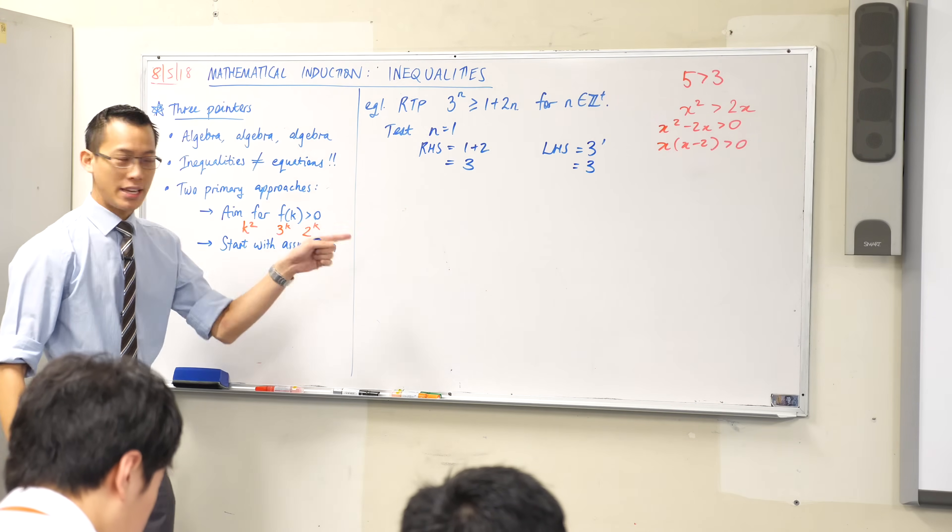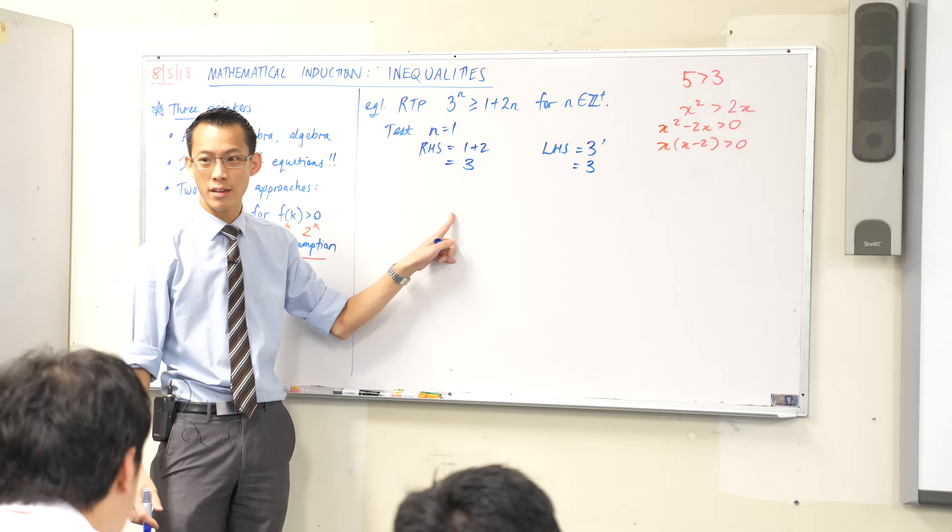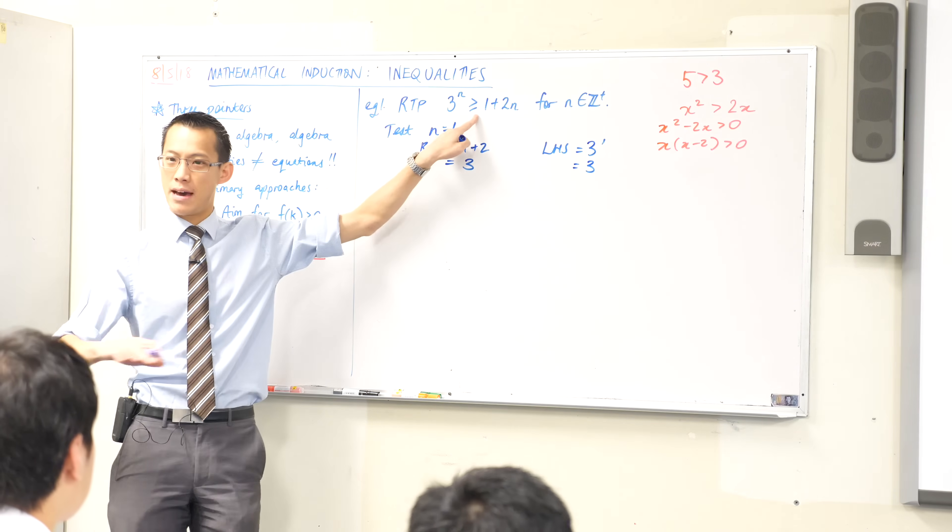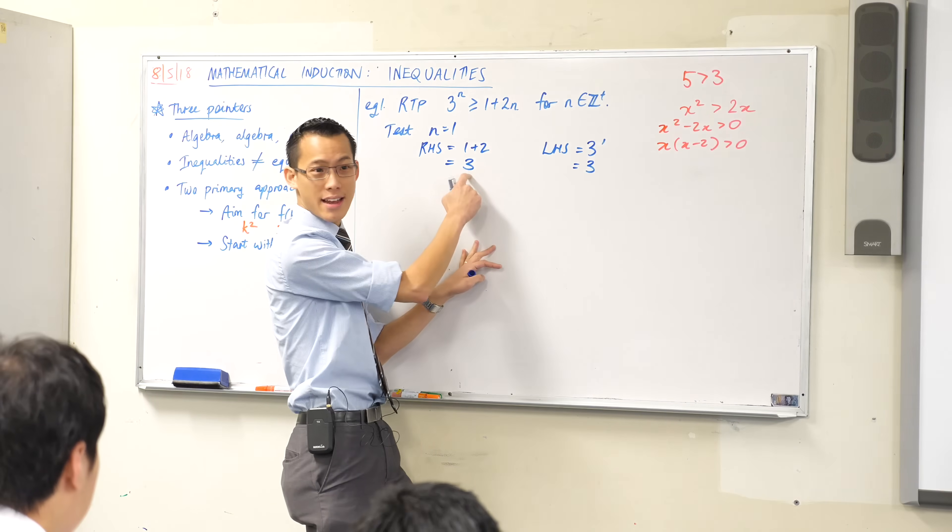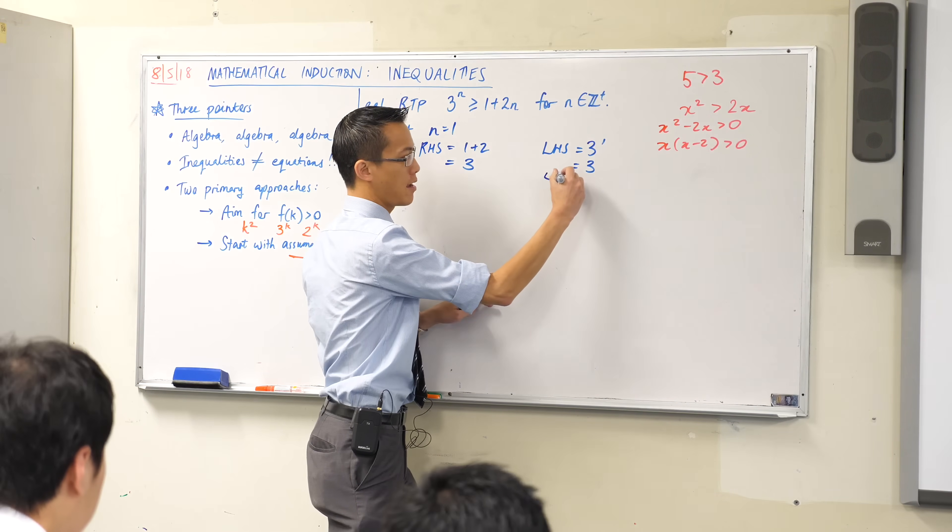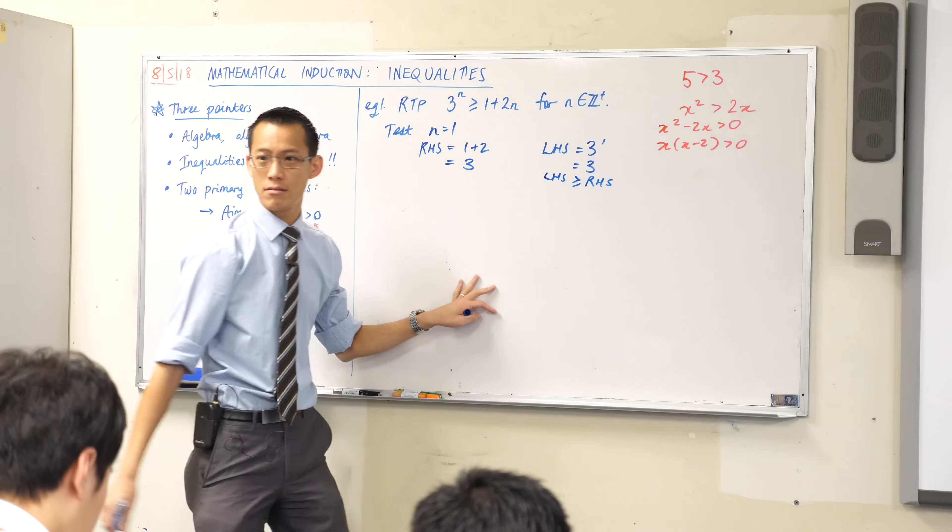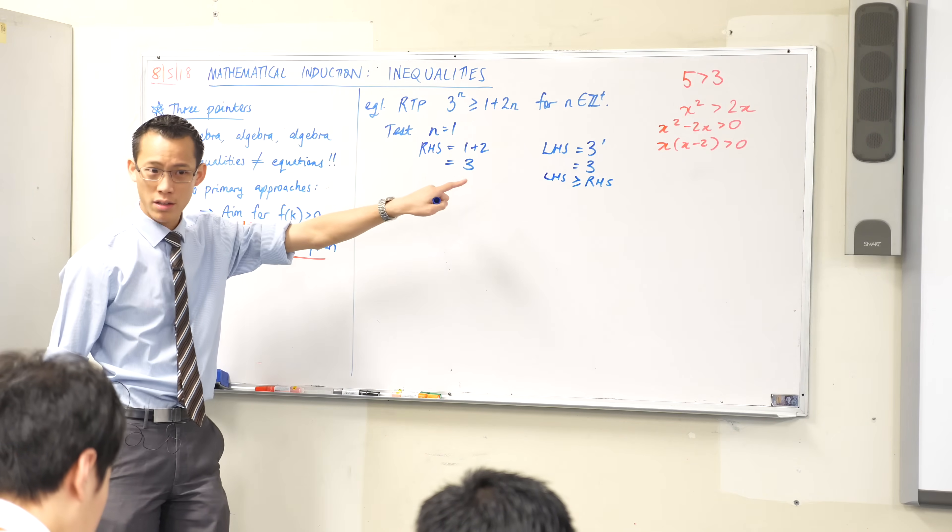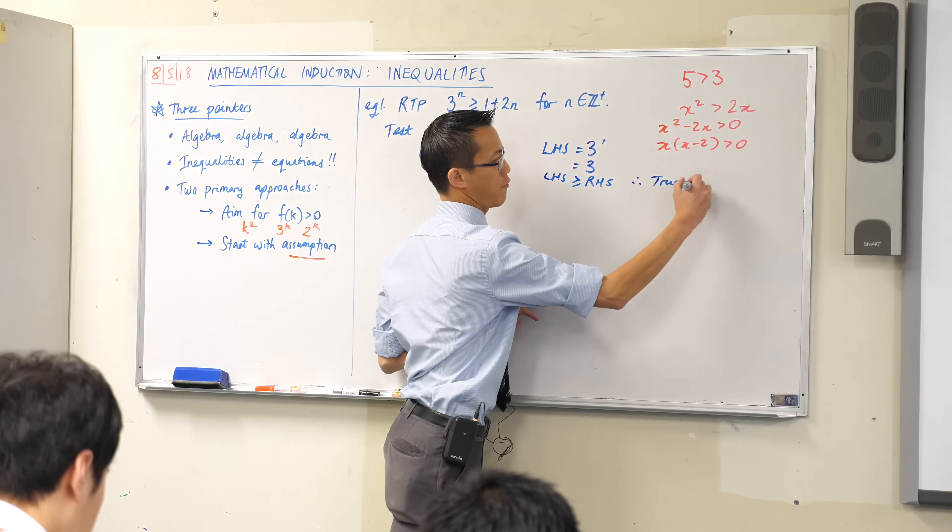There's my right-hand side. I'm now gonna do my left-hand side. Again, what's the left-hand side equal to? It's just gonna be 3 to the 1, which is 3. Now, note here you have exactly the same thing. Does that satisfy the inequality? And the answer is it does because my boundary is included. So therefore, it's true for n equals 1.